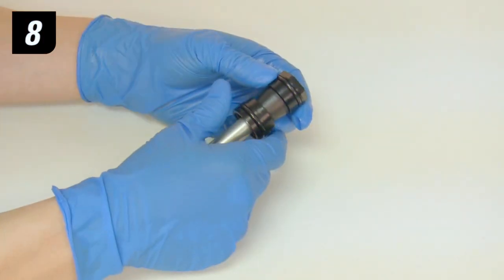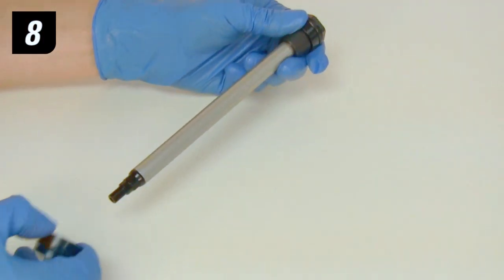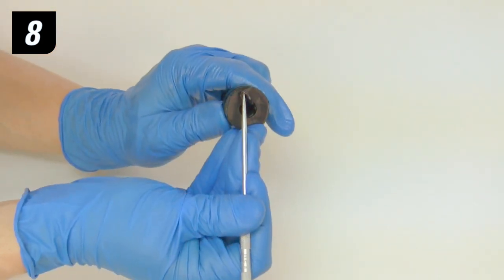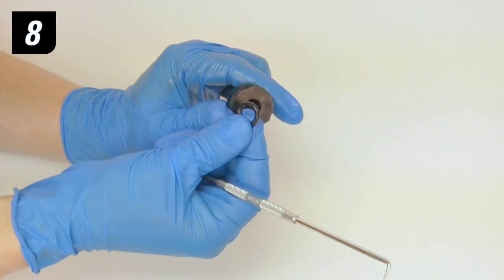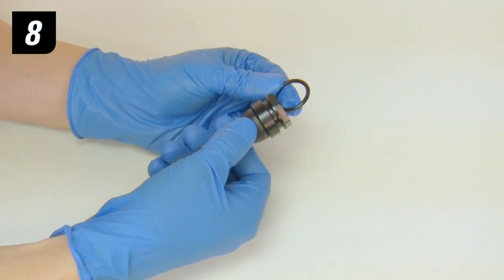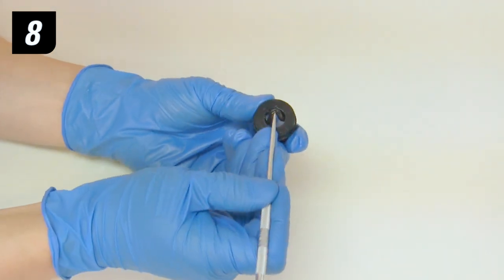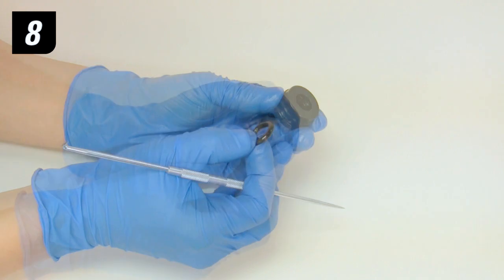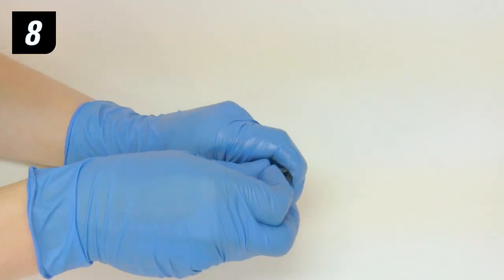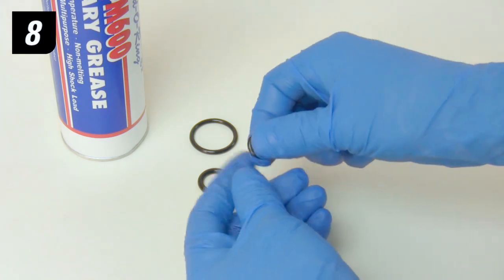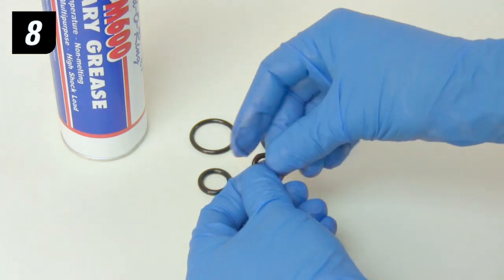Let's continue with Step 8. Remove the air seal head from the air shaft. Remove the inner and outer O-rings from the air piston. Then remove the inner and outer O-rings from the air seal head. Apply a small amount of grease to all of the new O-rings and install them.